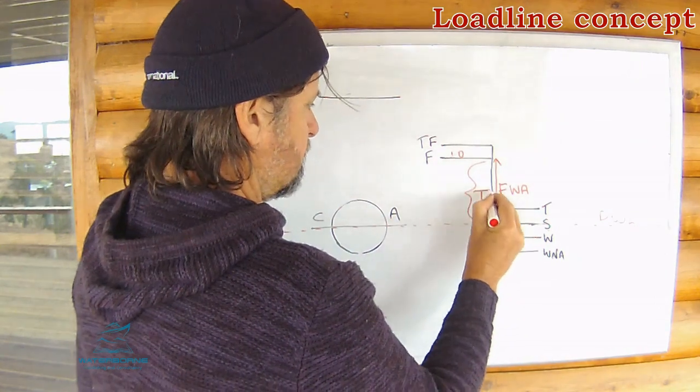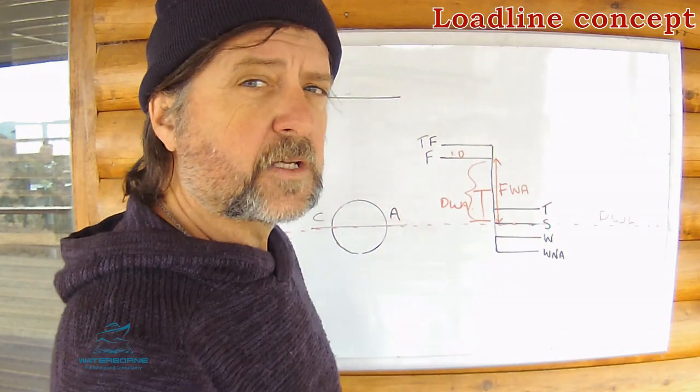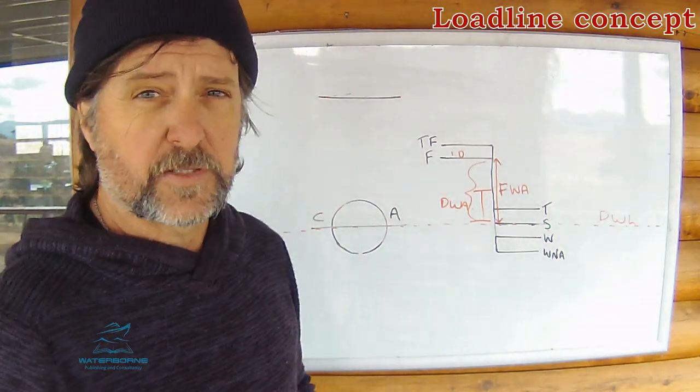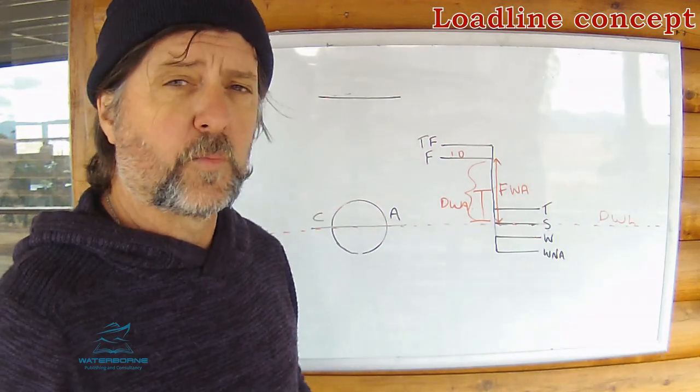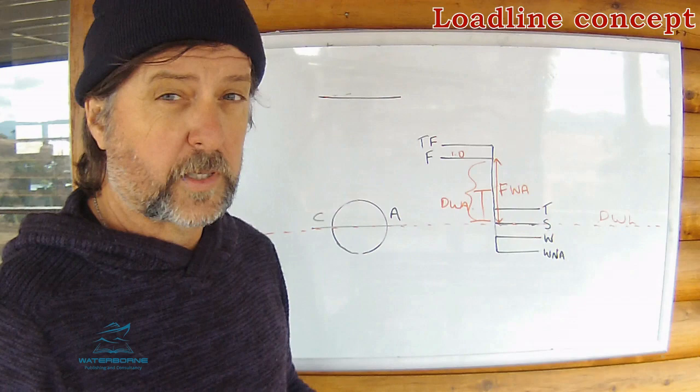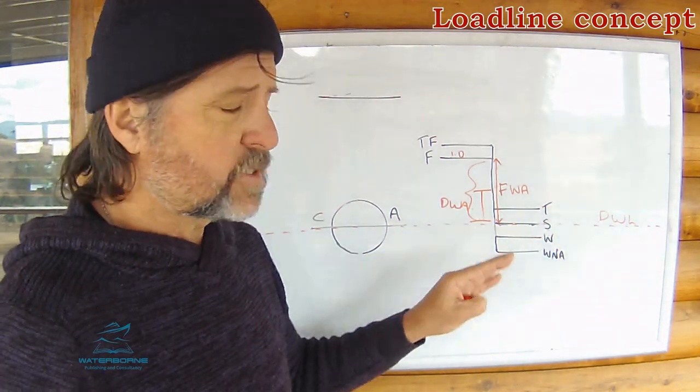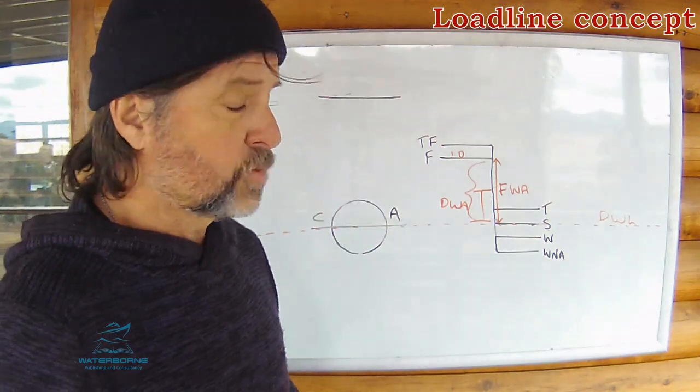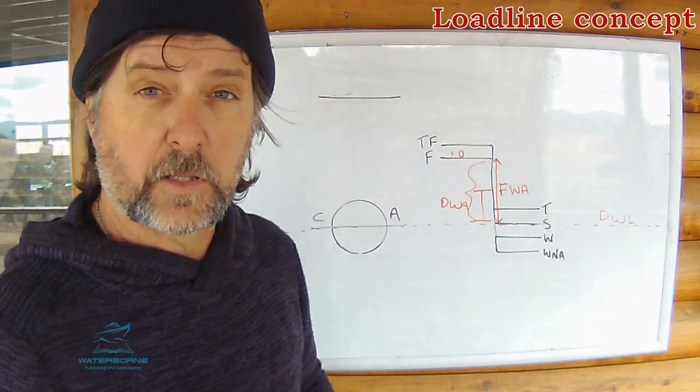and anywhere in between is known as dock water. So anywhere, say here, that could be called the dock water allowance for the density of the water that you're floating in at the time of loading. And there's some mathematics involved, obviously, in determining how much deeper you can sink the boat at that port before proceeding to sea so that you float where you'd like to float on the summer line. If you proceed to sea and you're in breach of the load line convention, your insurance is void, all sorts of ramifications. It's an unseaman-like thing to do.